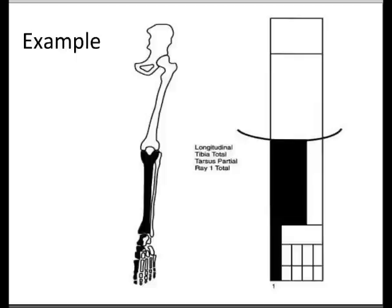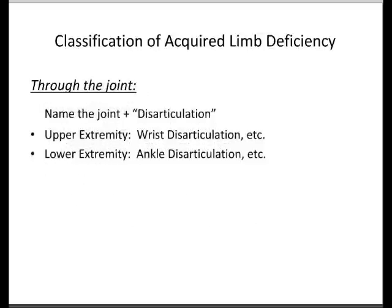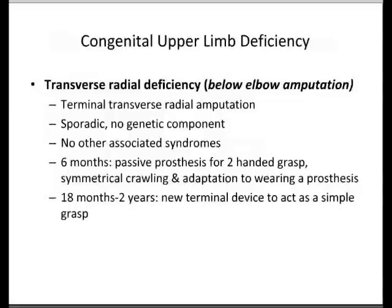For patients with acquired limb deficiency, classification is through the long bones. In the upper extremity: transradial is below elbow, transhumeral is above elbow. In the lower extremity: transtibial or transfemoral are your below and above knee amputations. Or classification is through the joint — naming the joint and the disarticulation, such as wrist disarticulation in the upper extremity or ankle disarticulation in the lower extremity.